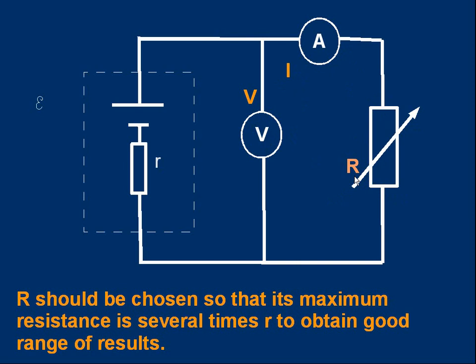Try and get a good range of values from high values to low values of voltage and current. That will give us a set of values of V and I. The important point to note to get good results is that R should be chosen so that its maximum resistance is several times, maybe 10 times at least, the resistance of r. If we choose the external resistor R to be too small, we'll never be able to adjust it to get small currents. To get small currents, we need a large resistance. A good range of values helps us get accurate results.